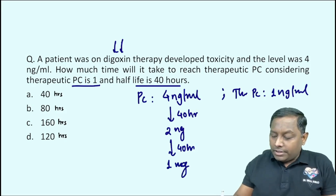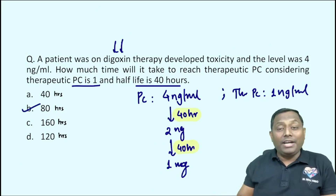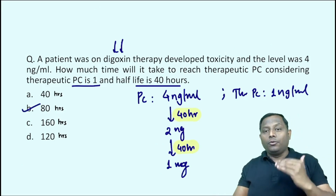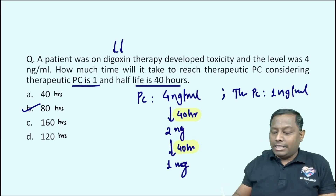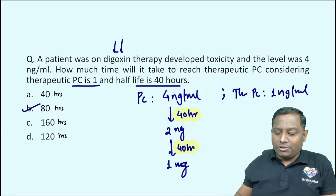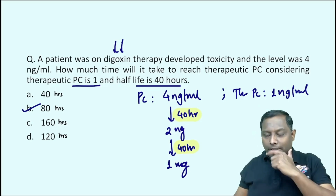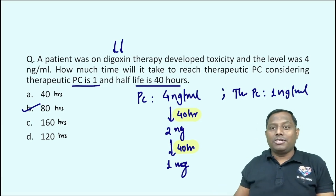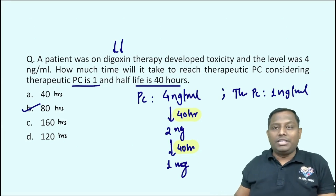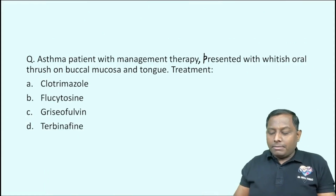Then after another 40 hours it will be 1 nanogram per mL. So how much time will it take? 40 plus 40 — we require around 80 hours to bring it from 4 to 1. Two half-lives are needed, and that is 80 hours. It's a pretty simple question — in fact, NICT November 2024 also asked a question on half-life calculation.